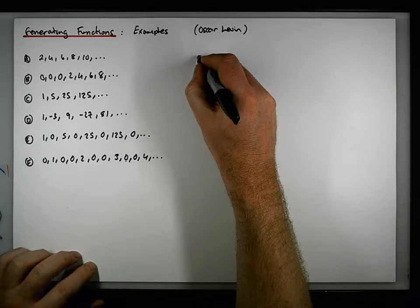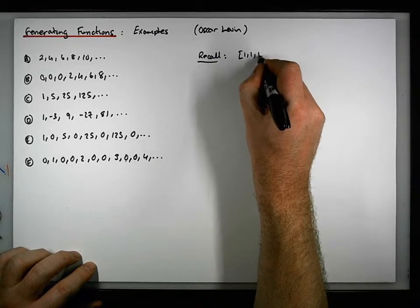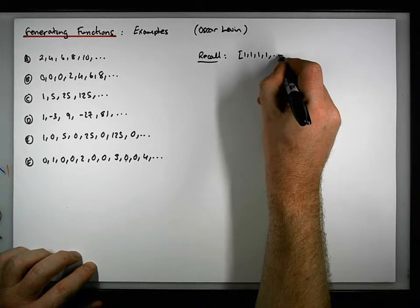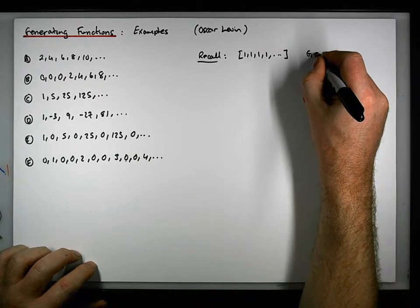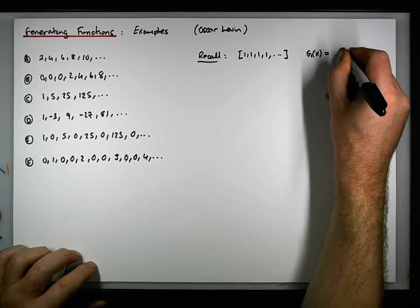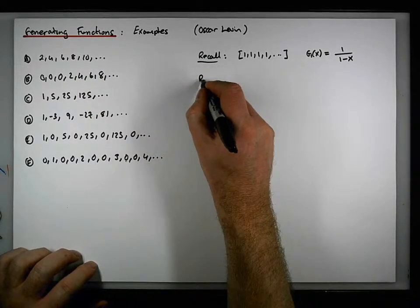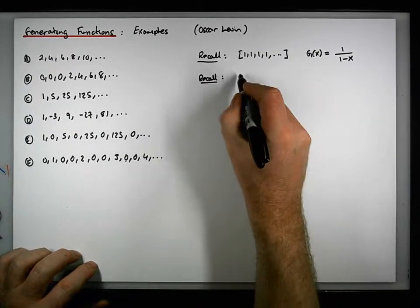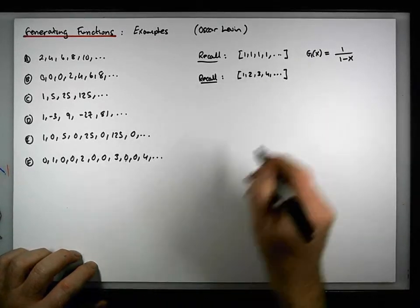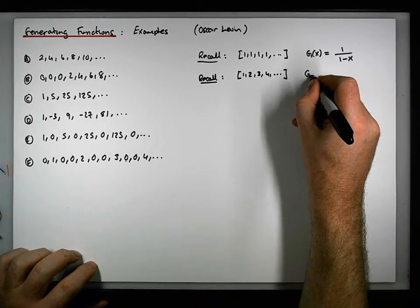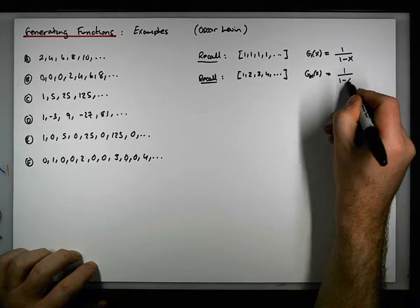Let's recall that the generating function for the constant sequence of 1s is g₁(x) = 1/(1−x). And from a previous video, the generating function for the sequence of natural numbers 1, 2, 3, 4, … is gₙ(x) = 1/(1−x)².